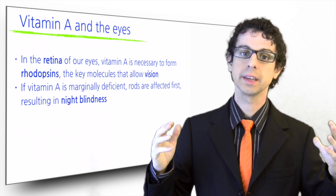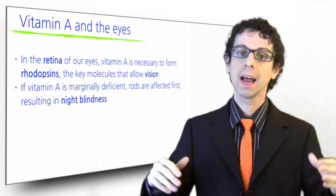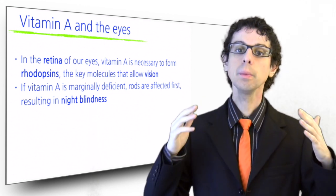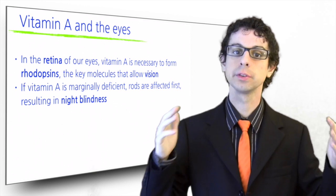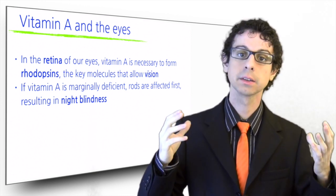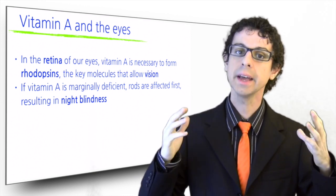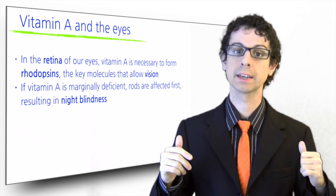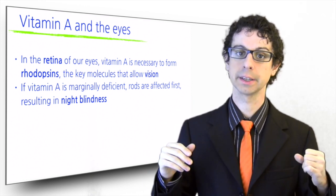Suppose you arrive late at the movie theater and the movie is already on. As you go from the bright hallway to the dark theater, you won't be able to see anything for a few instants. Within a few seconds, however, thanks to vitamin A, your eyes will start adjusting and soon your vision will be back to normal, in spite of the dim light.